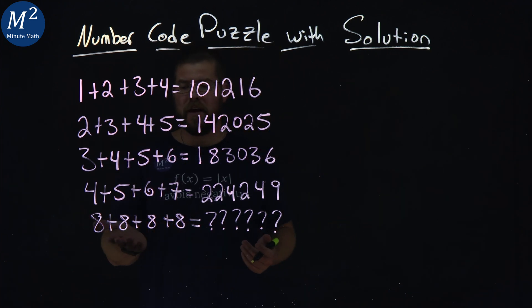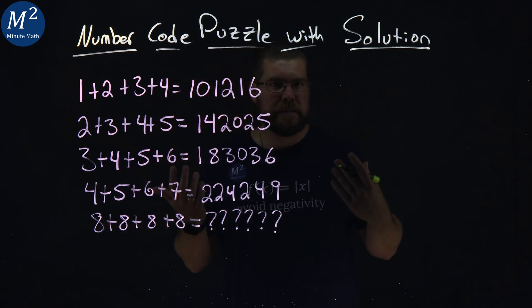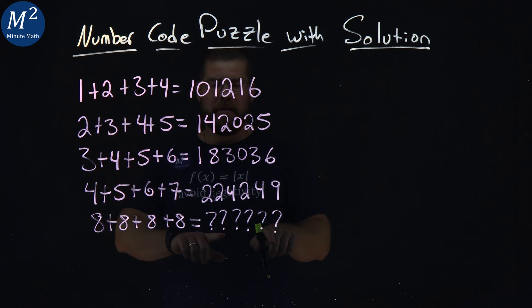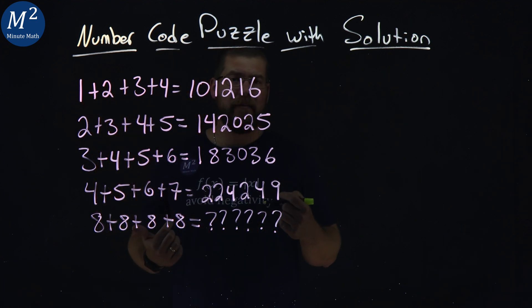And then honestly, what is 8 plus 8 plus 8 plus 8 equal to, really revealing what is this pattern that's happening here? So pause this video, see if you can figure out what the last number is, what pattern we have here.